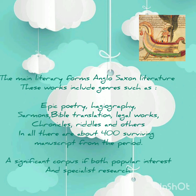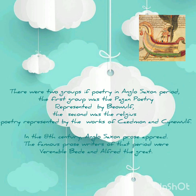The main literary forms of Anglo-Saxon literature include genres such as epic poetry, hagiography, sermons, Bible translations, legal works, chronicles, riddles, and others. In all, there are about 500 surviving manuscripts from the period. There were two groups of poetry: the first was pagan poetry represented by Beowulf, and the second was religious poetry represented by the works of Caedmon and Cynewulf. In the 8th century, Anglo-Saxon prose appeared, and the famous prose writers were the Venerable Bede and Alfred the Great.